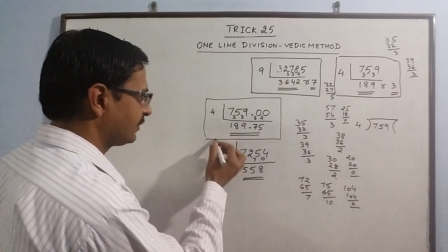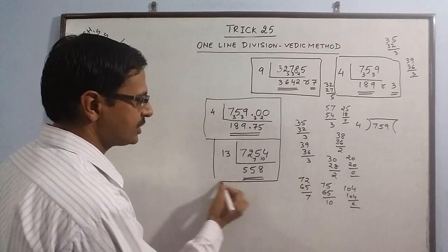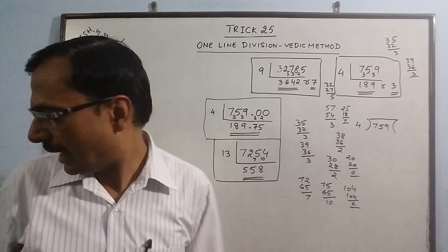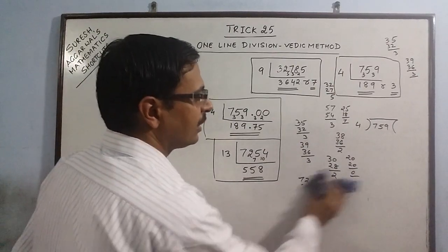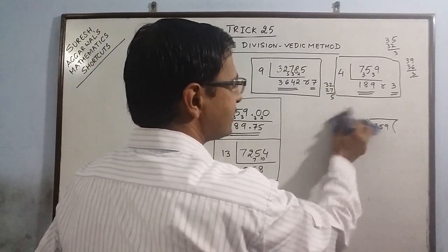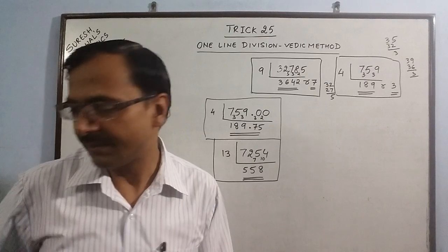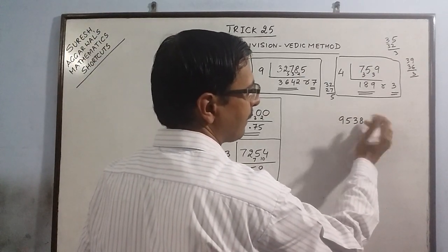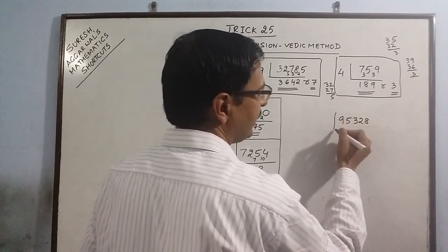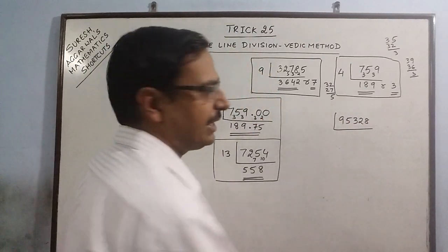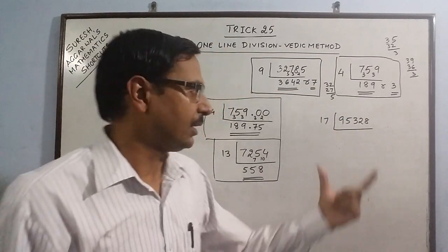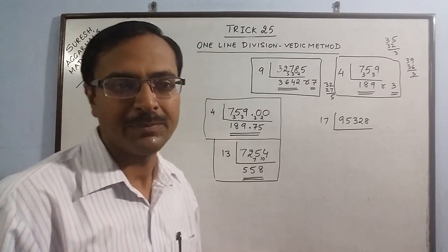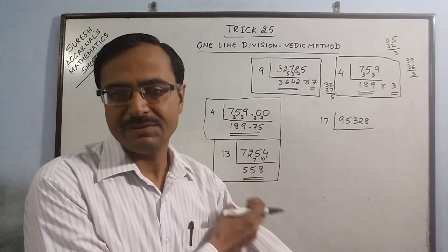One more example we will have where we will carry out division by a 2-digit and get the answer in decimals. Now say we are taking the example of 95328, and we divide this by say 17. Again the dividend is very large, so the traditional method will consume a lot of lines, a lot of energy and time. Now single line division of this.